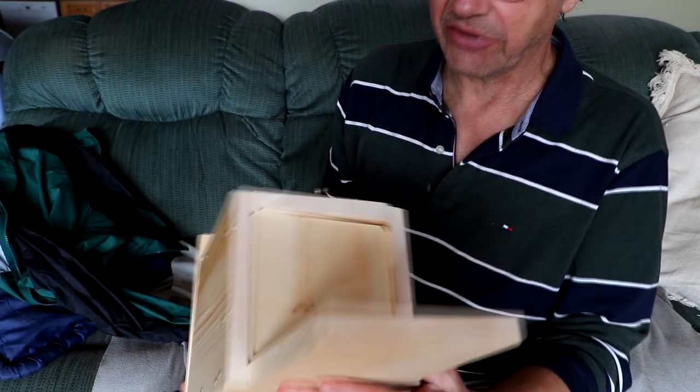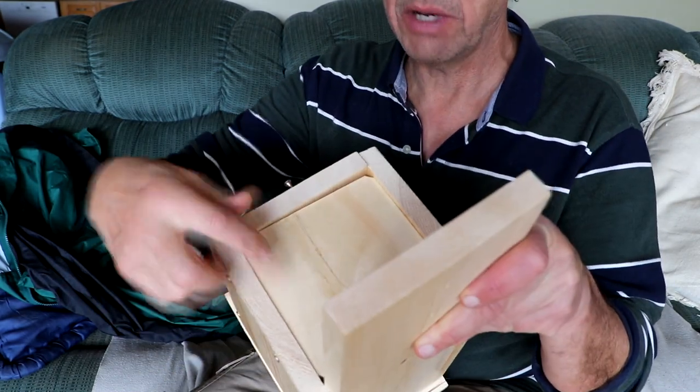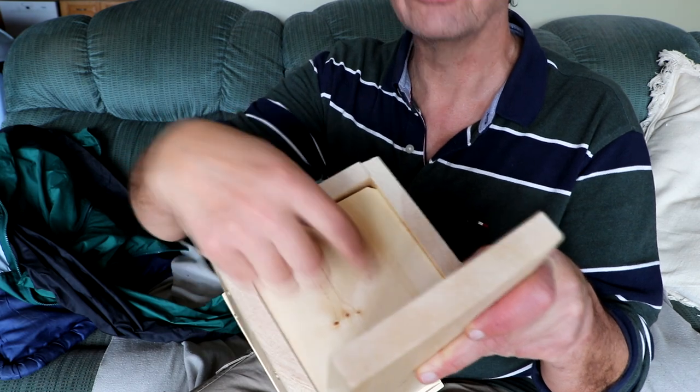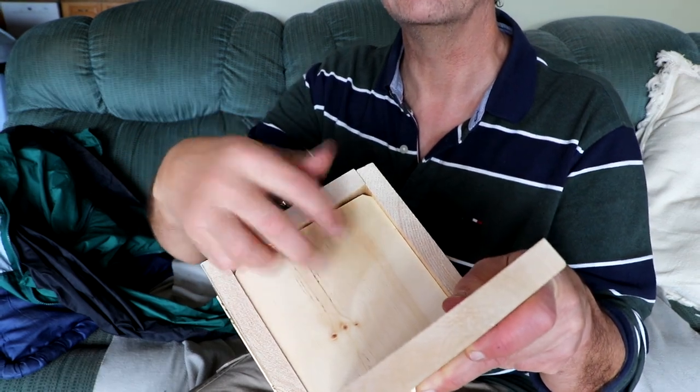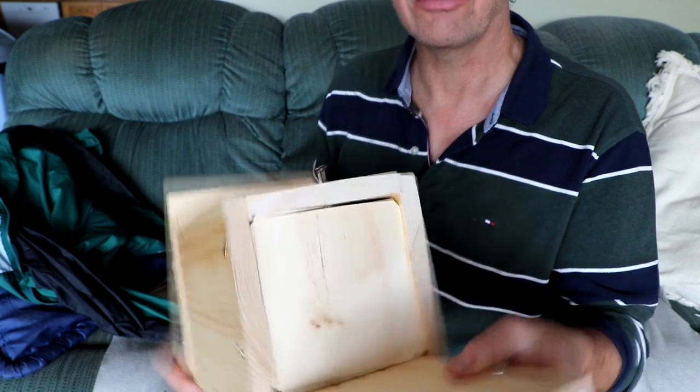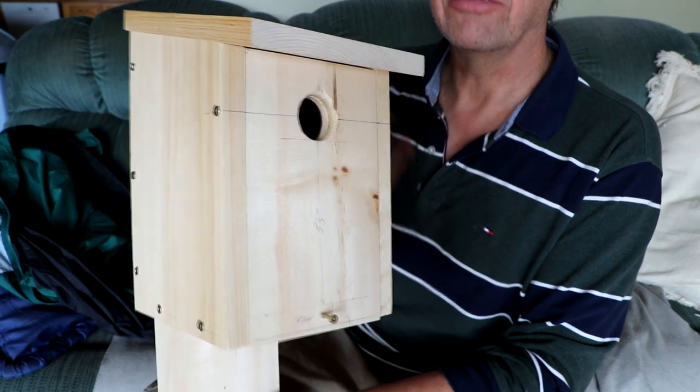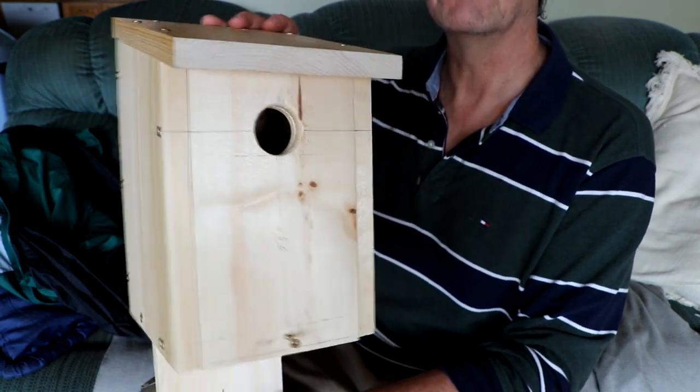I also put a few drainage holes. They're not in here yet, I did cut the corners of the floor off a little bit. But I'll drill a couple holes, two or three holes in the bottom here too, just to aid in any water drainage if needed. If you had a driving rain that happened to go in the nest hole, then it might be beneficial to have a few little holes in the bottom to enable drainage.